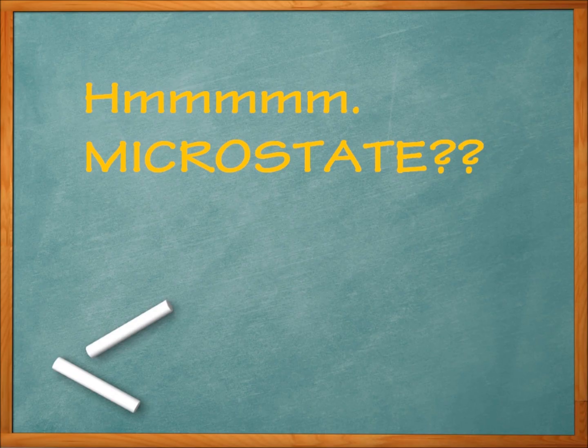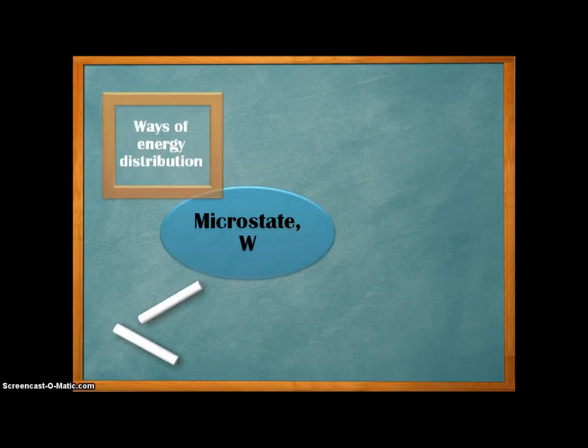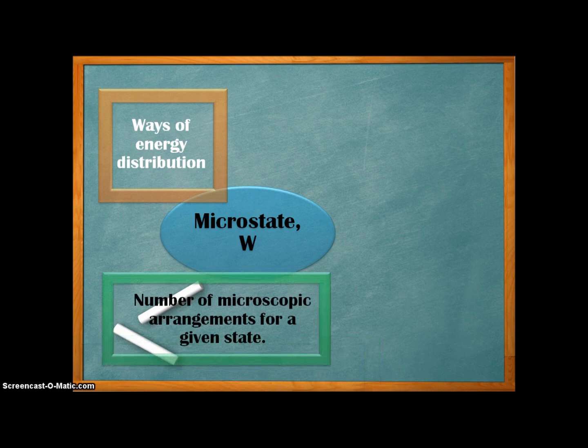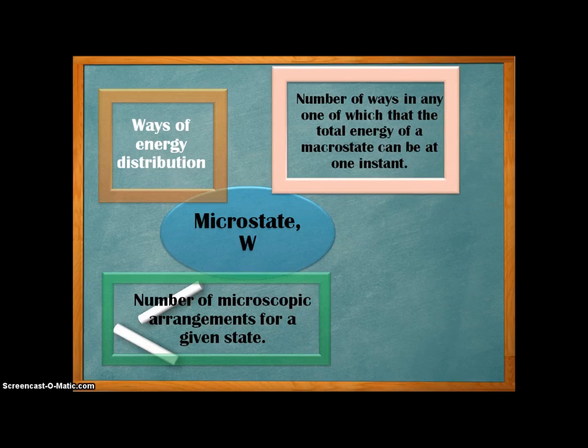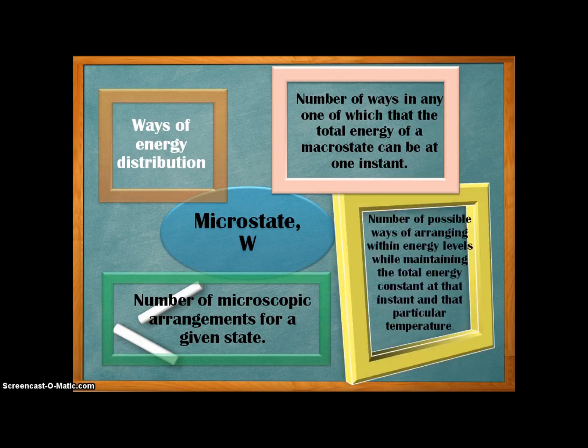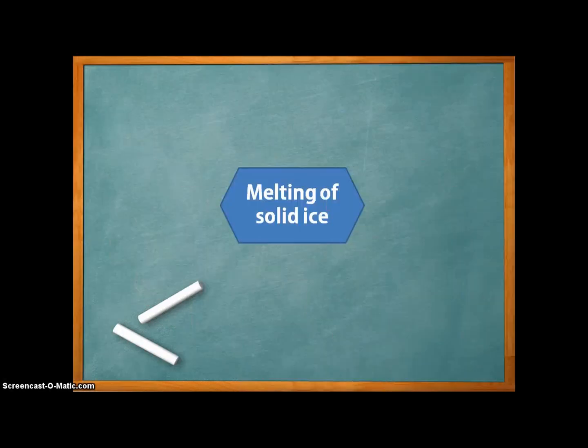Then, what do you mean by microstates? W, which stands for microstate, is the ways of energy distribution. It is the number of microscopic arrangements for a given state. The number of microstates for a system determines the number of ways in any one of which that the total energy of a microstate can be at one instant. We can also think of W as the number of possible ways of arranging within energy levels while maintaining the total energy constant at that instant and that particular temperature.